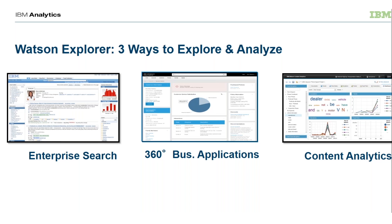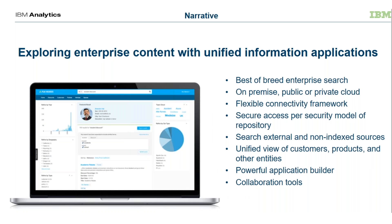360-degree business applications allow you to take that search data and build an application around it very quickly — drilling down into the data as well as connecting to additional applications. For example, in a help desk solution, you might have search capabilities going through product manuals, FAQs, blogs, forums, and trouble ticket systems. At the same time, you might have a widget showing past calls from a specific customer, and another widget connecting to your CRM system showing what entitlements that customer has, giving you a full view of the person you're working with as you answer their question.